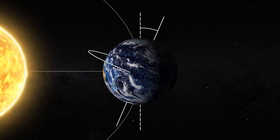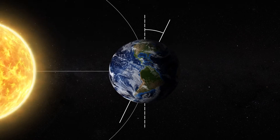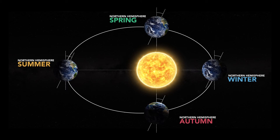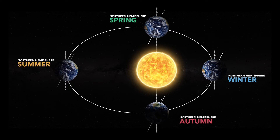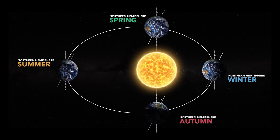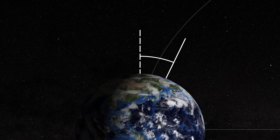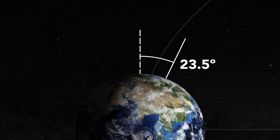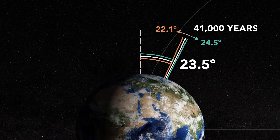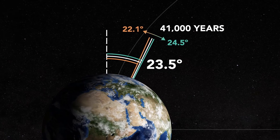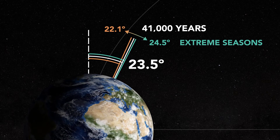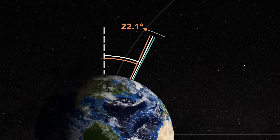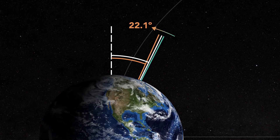The Earth rotates every day on its axis, giving us night and day, and it revolves around the sun once a year. Our seasons occur because the Earth tilts on its rotational axis, such that one hemisphere gets more direct sunlight than the other during its summer. The current angle of the Earth's tilt is 23.5 degrees. The tilt of the Earth varies from 22.1 to 24.5 degrees every 41,000 years. As the angle of the Earth's tilt increases, seasons become more extreme, especially in the higher latitudes where ice sheets form. Currently, the tilt is decreasing, which is not favorable for ice sheets to form.